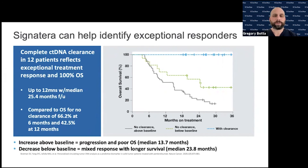Importantly, given that the side effect profile of immunotherapeutics is not always zero, patients who are not responding can be taken off therapy earlier. Additionally, patients who show pseudoprogression on scans but have decreasing ctDNA may lead an oncologist to continue IO therapy until clearance, as long as there is a decrease from baseline.